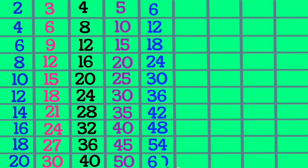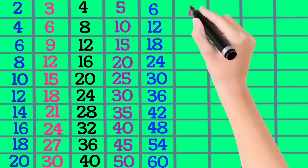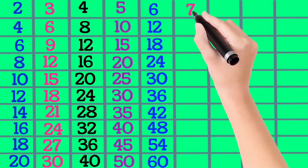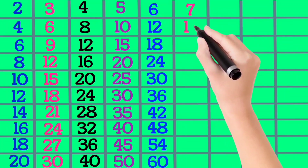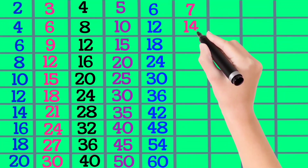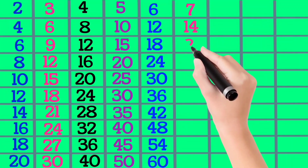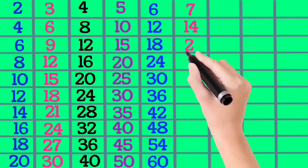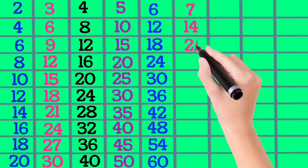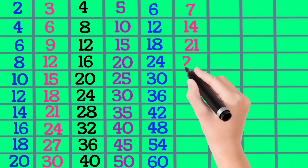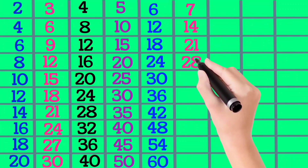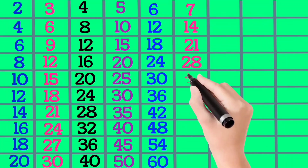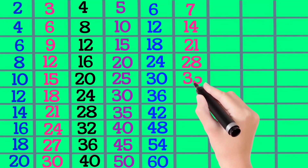7×1 is 7, 7×2 is 14, 7×3 is 21, 7×4 is 28, 7×5 is 35.